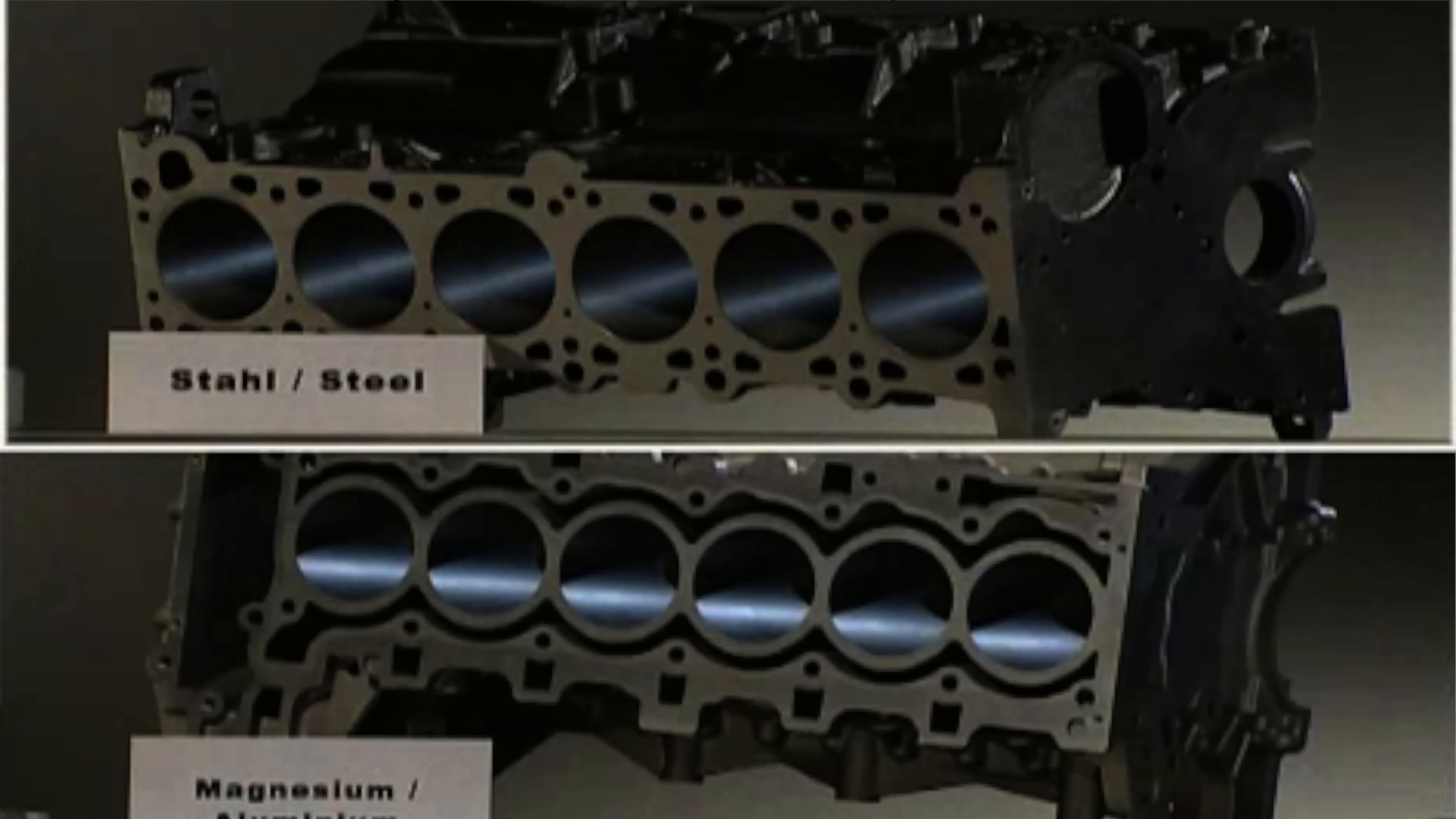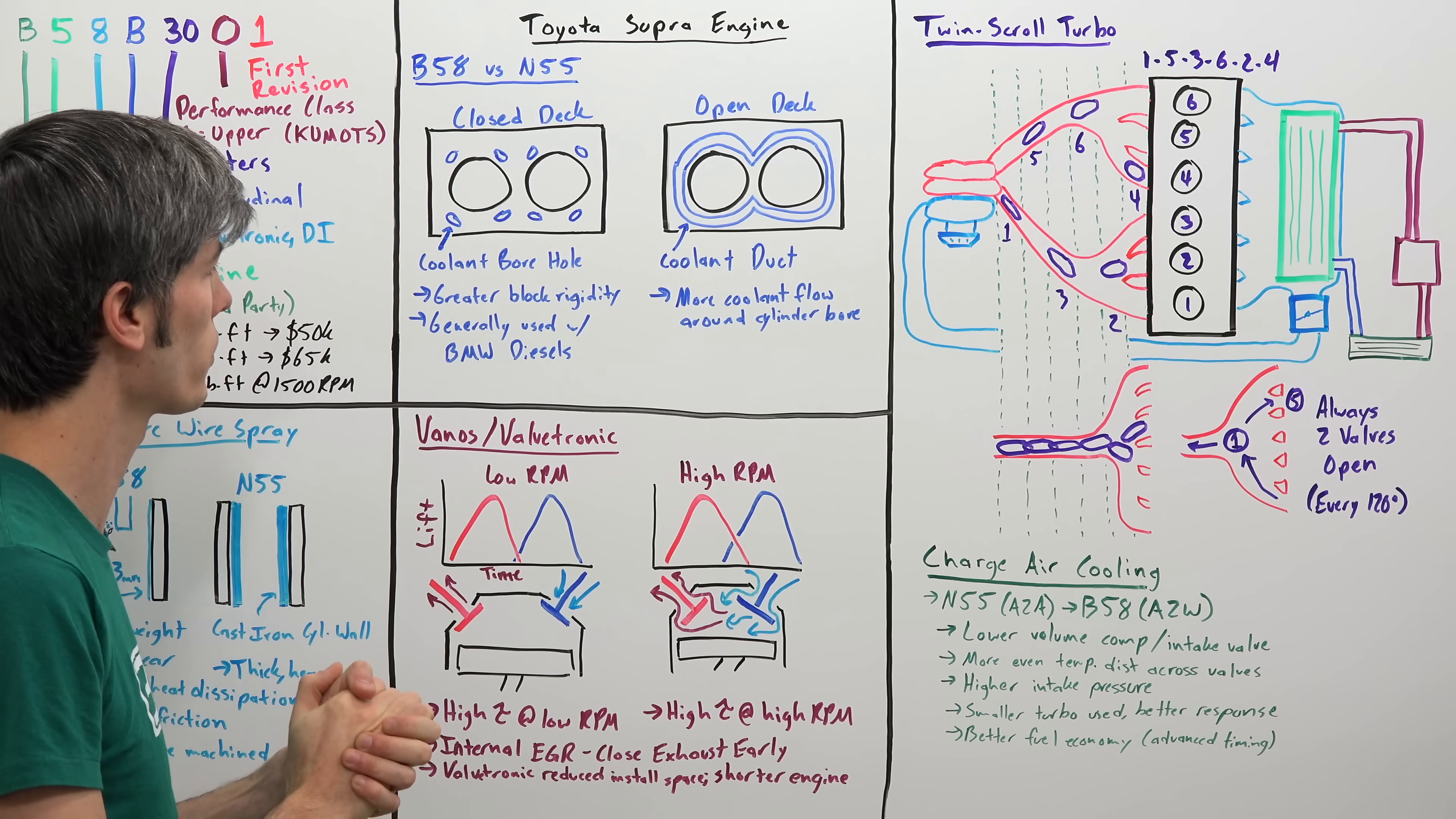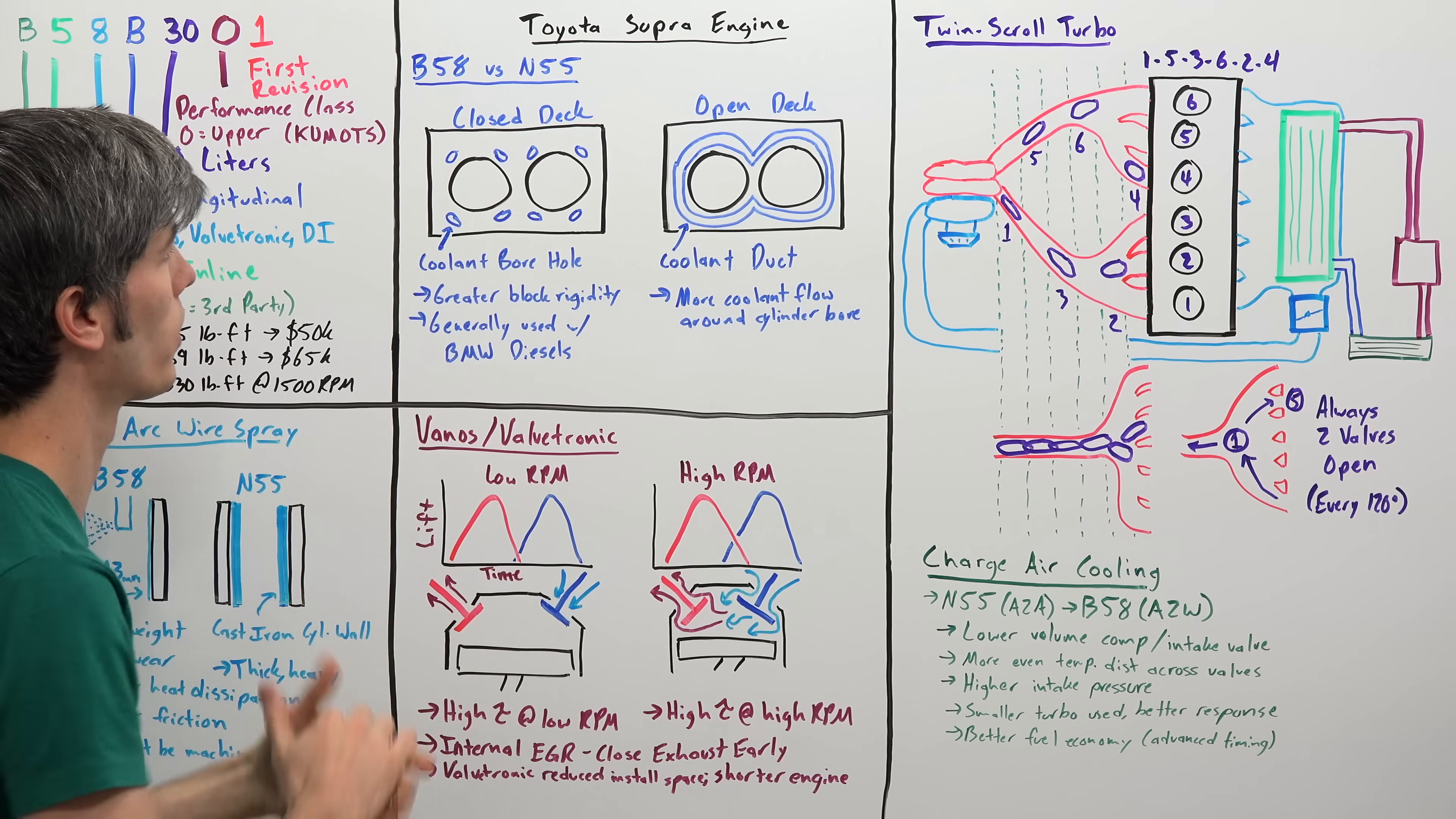So BMW does this with their diesel engines, but now they're doing it with their B58 engine. And it has that added strength, added durability, added rigidity of the block there. Of course, the advantage of using this open deck design is that you have that coolant flow all around your cylinder bore. So you have to change up a little bit your coolant strategy using the closed deck, but overall it is going to be a stronger engine that can handle higher pressures within it. So you can see just these smaller little coolant bores versus an open deck is going to have that entire area around that cylinder available for that coolant to flow around it. And of course I've just drawn two cylinders here. This is an inline six cylinder engine with the twin scroll turbo. We'll get a little bit into that later on, but overall a stronger engine block design versus the previous N55.